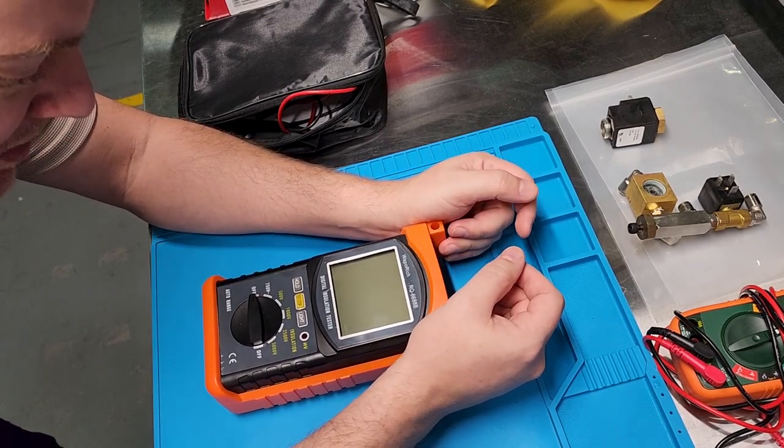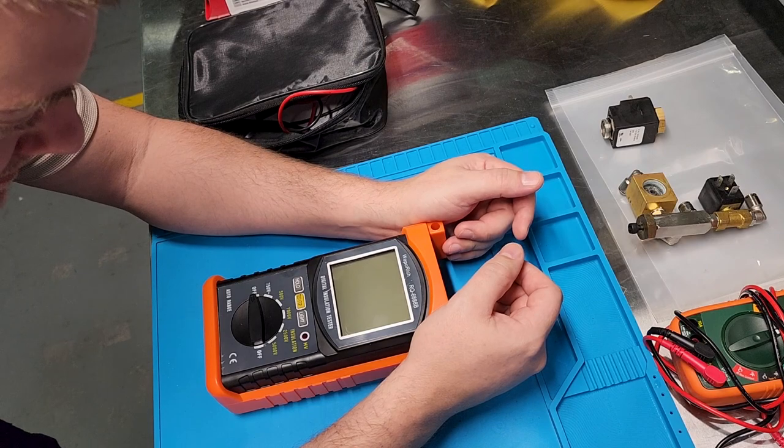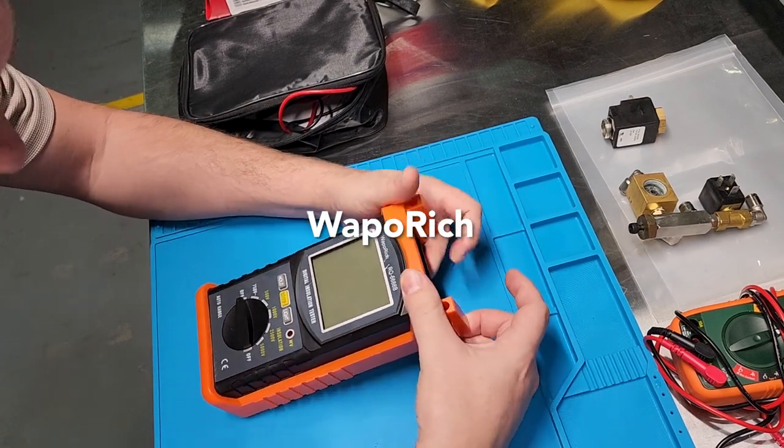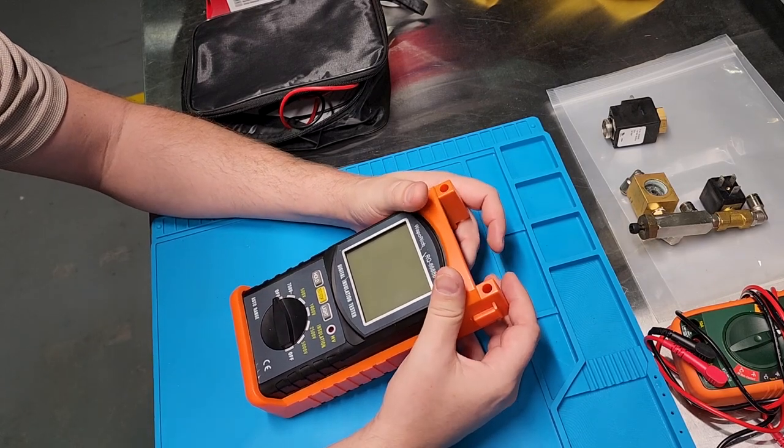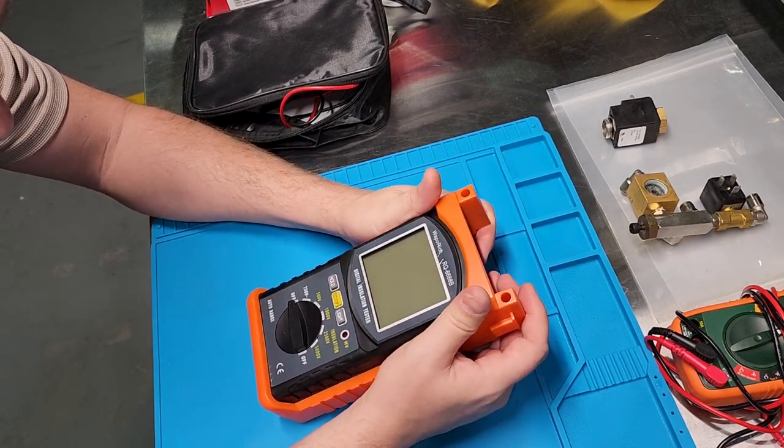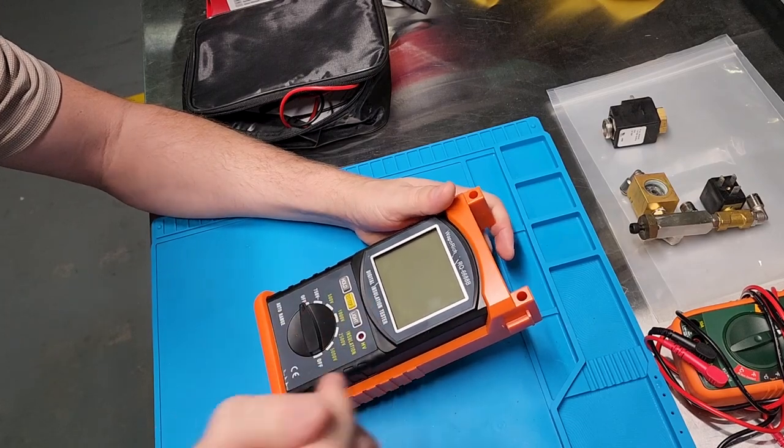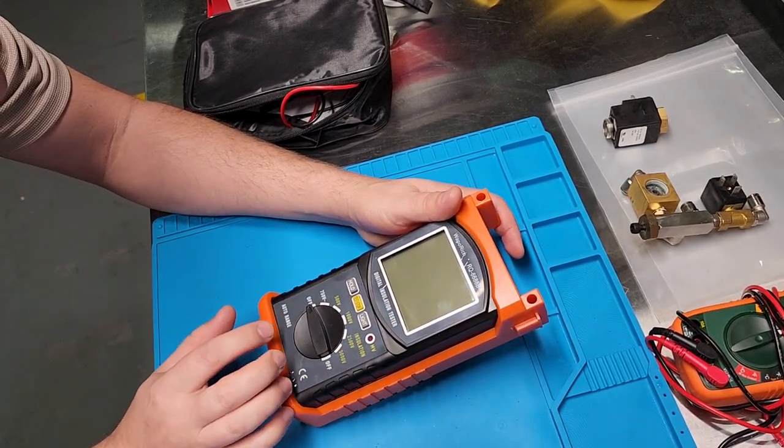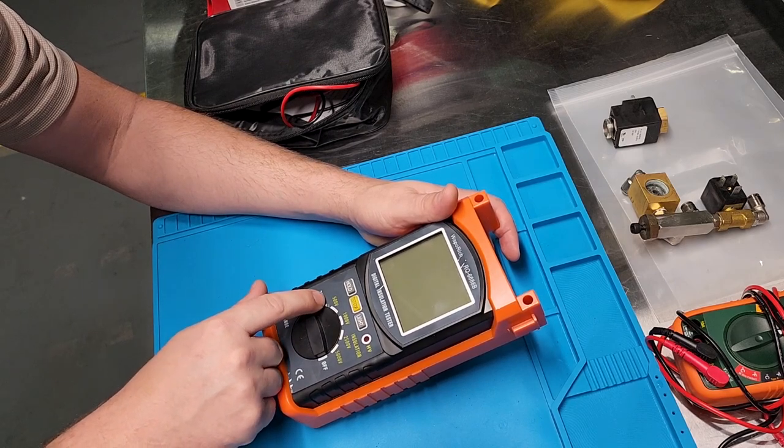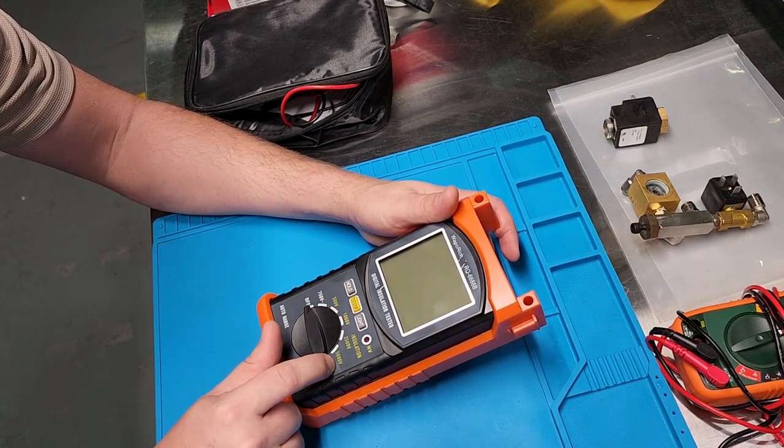Okay, so this is the Wapple Rich RQ-6688 Bravo. There's multiple versions of this on Amazon. I'll leave a link to this one in the video description. Now the reason that I chose this specific one is because not only can it do voltage measurement, but it outputs voltage up to 5,000 volts.